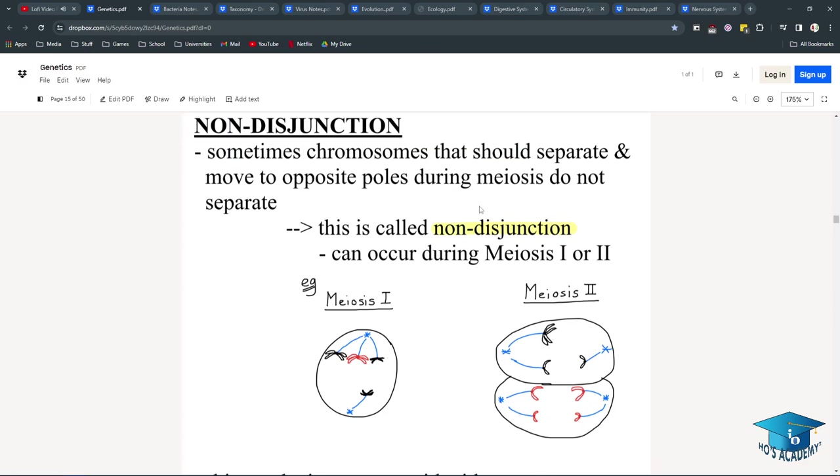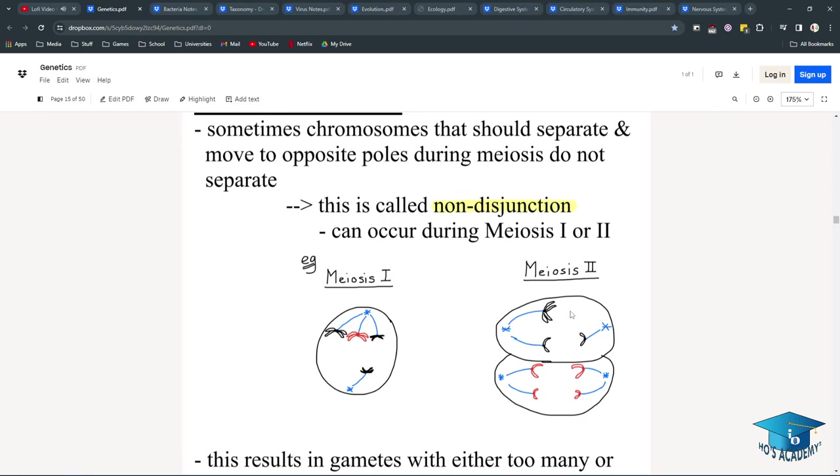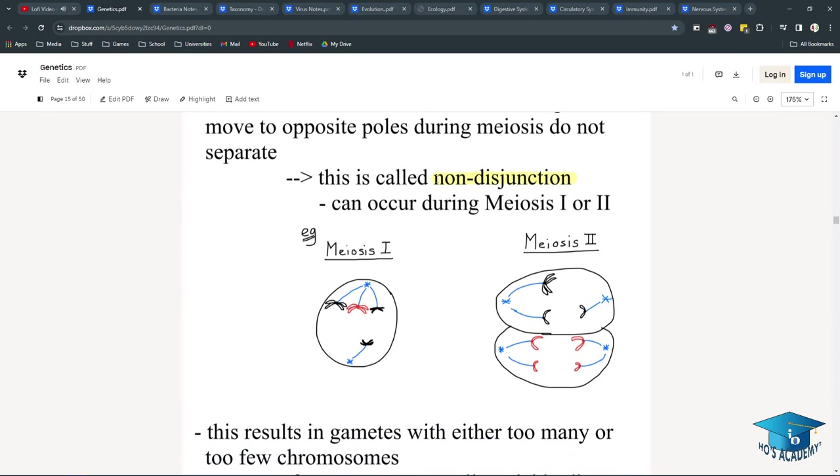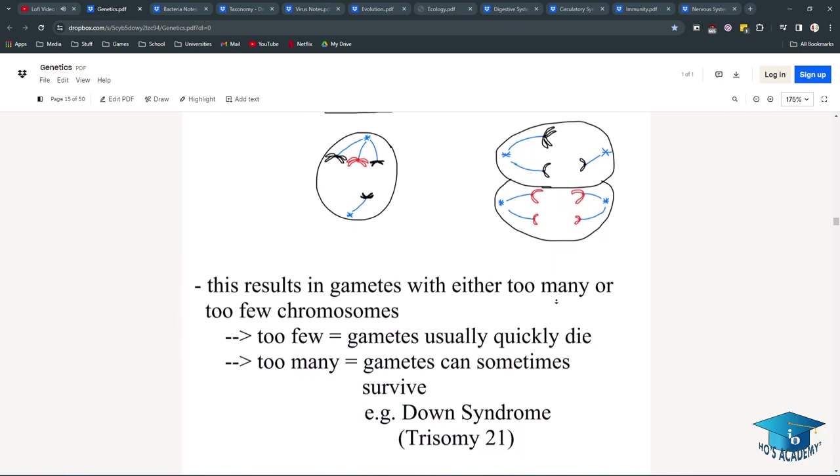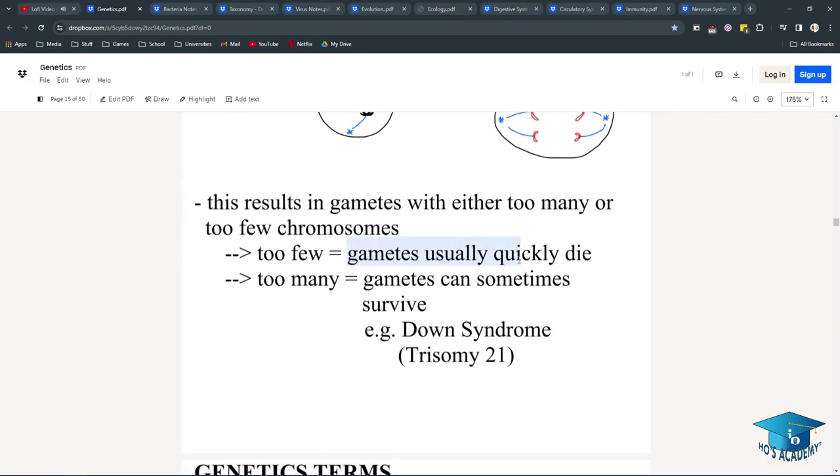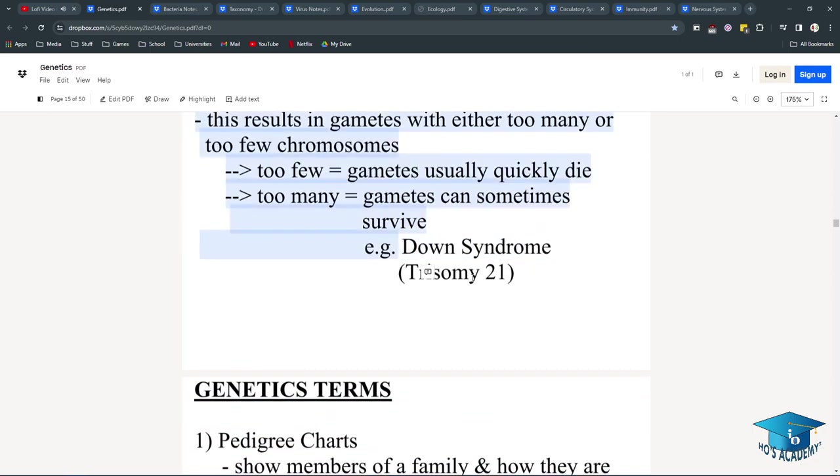Non-disjunction. Sometimes chromosomes that should separate by moving over, like when these spindle fibers pull things, they just don't. They just mess up, they stick around, or they get pulled extra. And this is non-disjunction, and it can occur during meiosis 1 or 2. And this results in gametes with either too many or too few chromosomes. And gametes will either quickly die, but if they have too many chromosomes, unlike too few, gametes can sometimes survive, and children will be born, and they might have Down syndrome, trisomy 21.